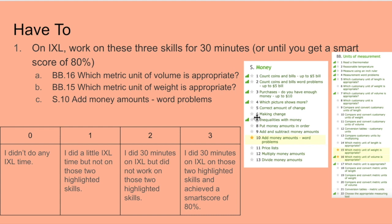Here is what the skills look like — you can also rewatch what I showed you previously on how to find them. Take a look at your rubric: in order to get a three, you need to do 30 minutes on IXL on those highlighted skills and achieve a smart score of 80 percent. So make sure you're working until you get a smart score of 80 percent or at least 30 minutes.